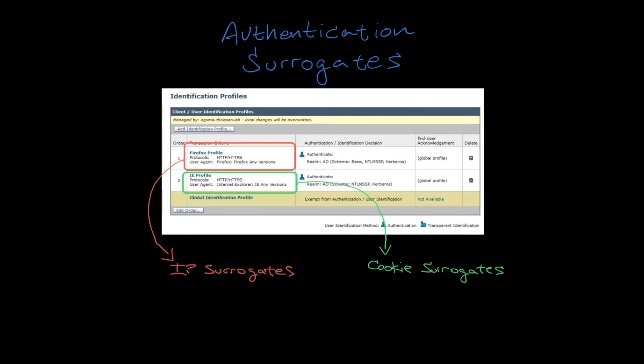If the first request is sent by Internet Explorer, the second identity will be matched and a cookie will be provided to the client for use as an authentication surrogate. Subsequent requests sent by Internet Explorer will use the cookie as expected and will continue to match the second identity.